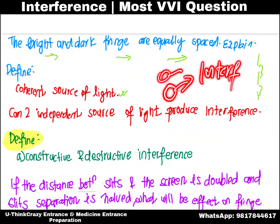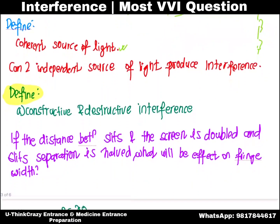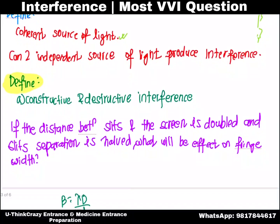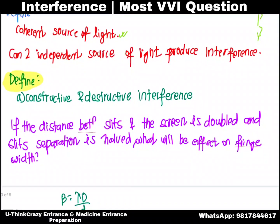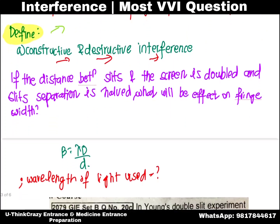The answer is no — two independent sources cannot produce interference. Define coherent source. Define coherent, constructive interference, and destructive interference.